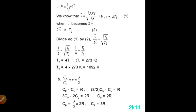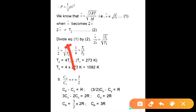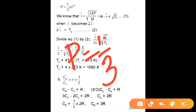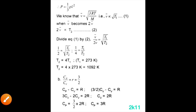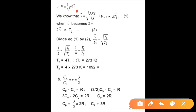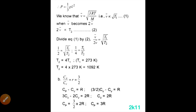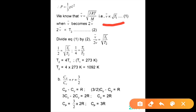The pressure of an ideal gas is given by P = 1/3 Nm v̄². Also, the RMS velocity is given by v_rms = √(3RT/M), so RMS velocity is directly proportional to the square root of temperature T.